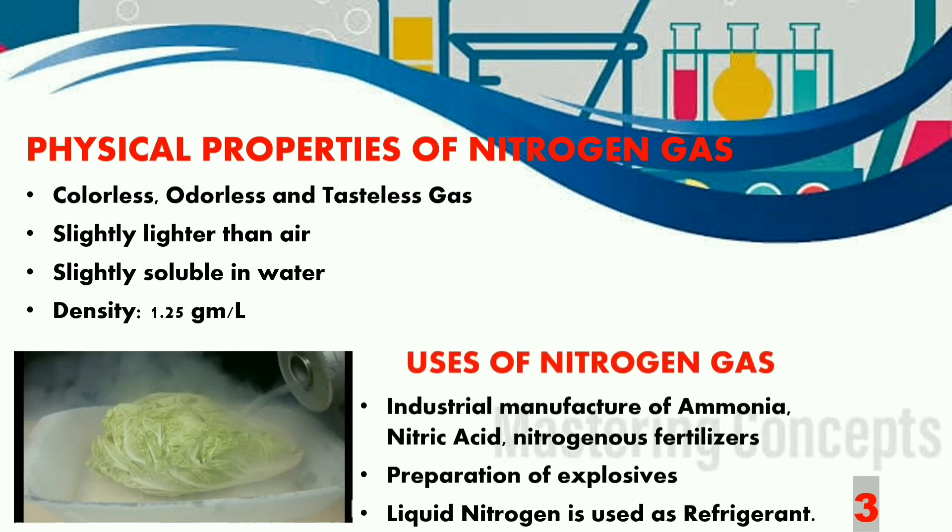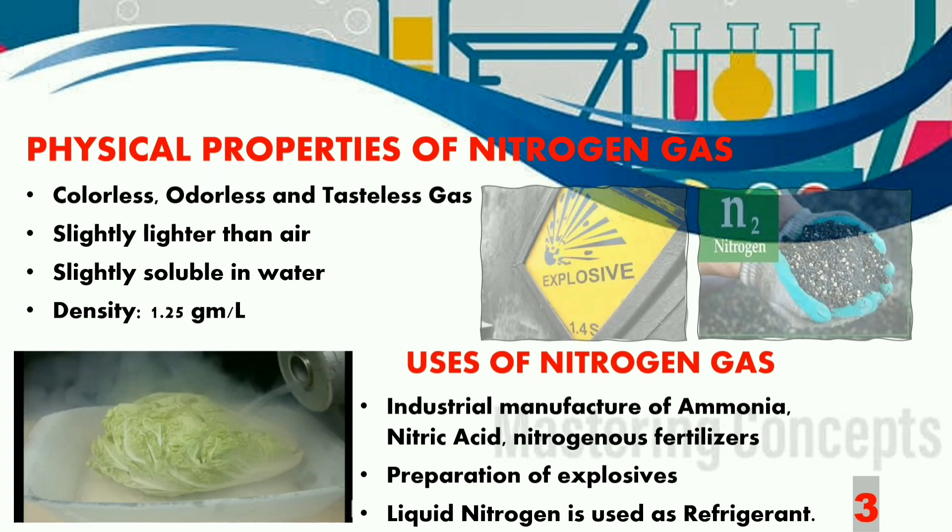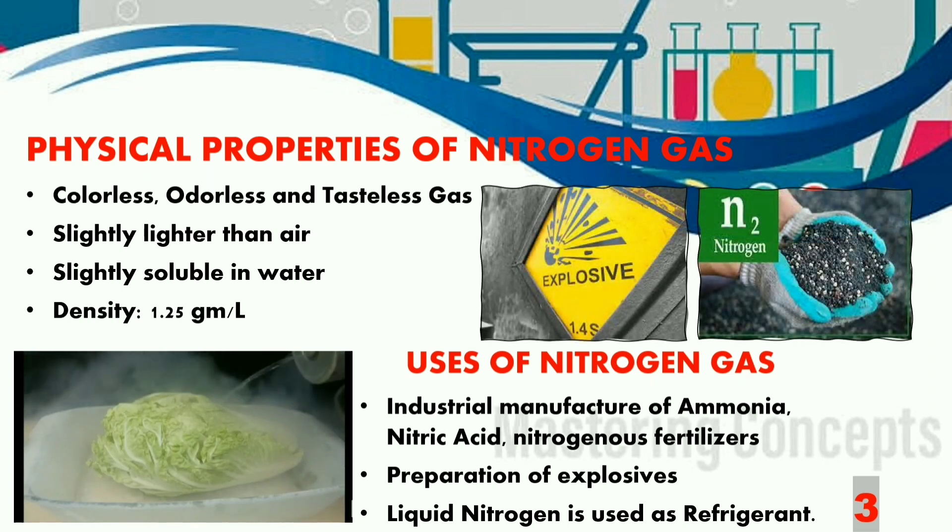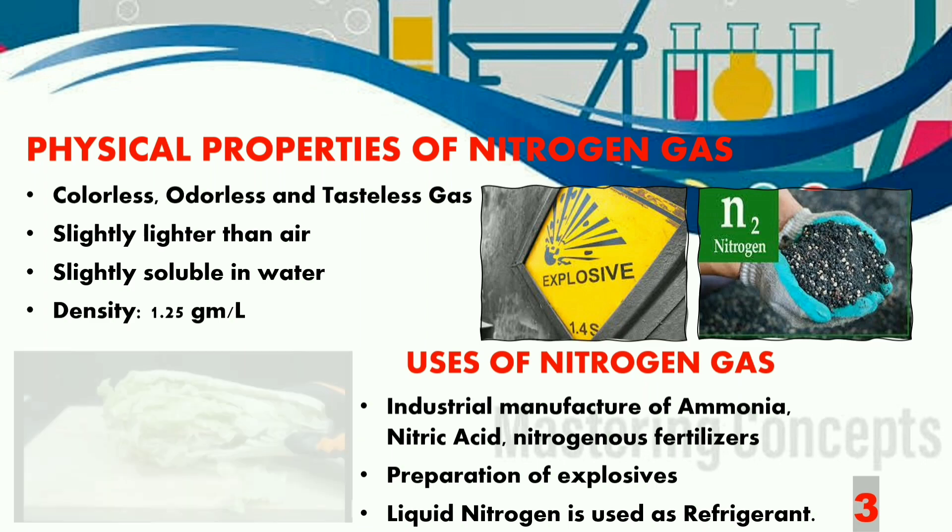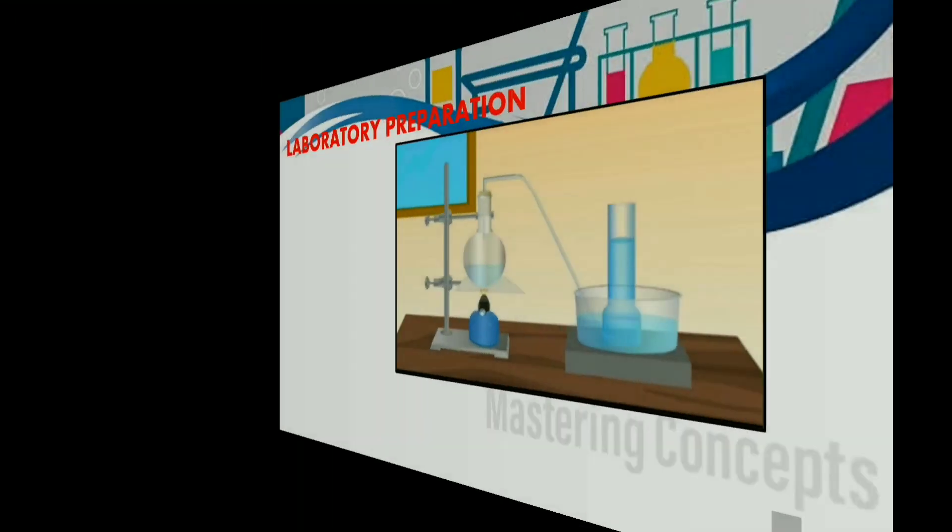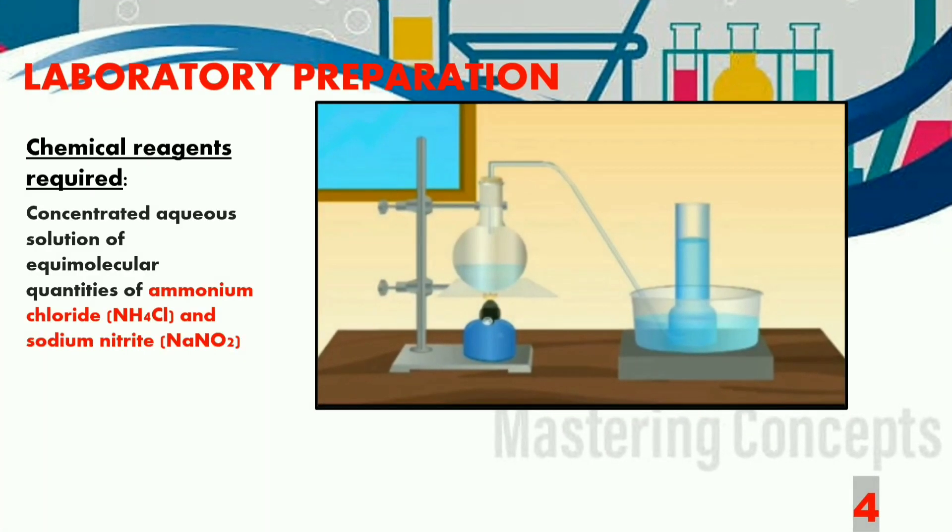Next let us learn about the uses of nitrogen gas. Nitrogen is used for the industrial manufacture of ammonia gas, nitric acid and the nitrogenous fertilizers. It is also used for the preparation of explosives and liquid nitrogen is used as a refrigerant. Let's now watch a video to see the effect of liquid nitrogen.